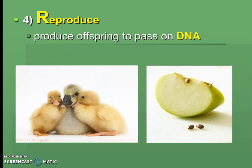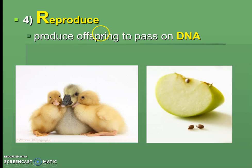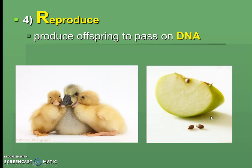R is for Reproduce. This is the fact that all living things need to make babies, or offspring. Living things produce babies to pass on DNA. Examples — already given on your sheet — include animals like ducklings or plants making seeds.